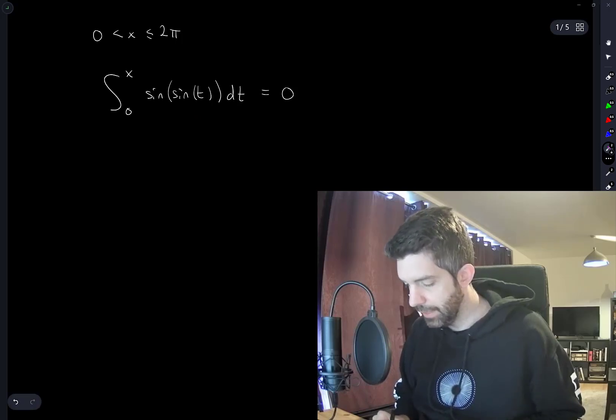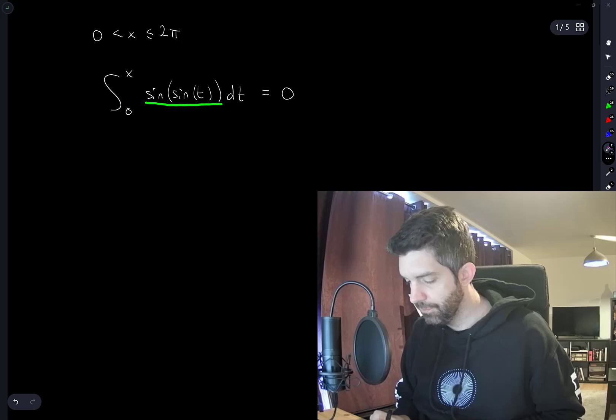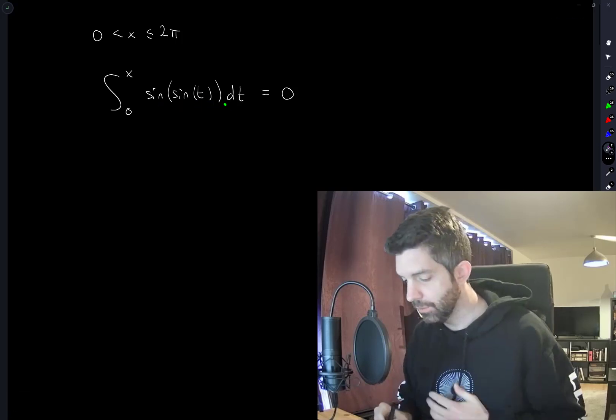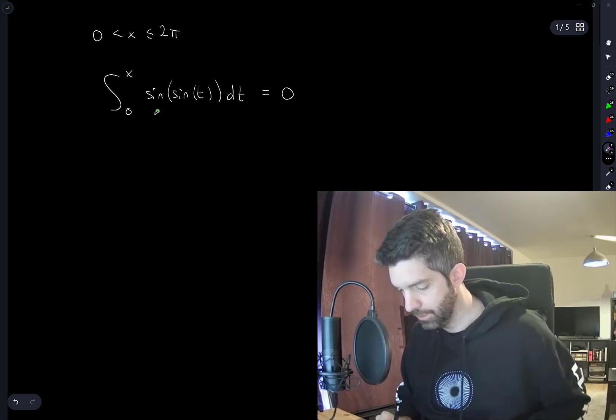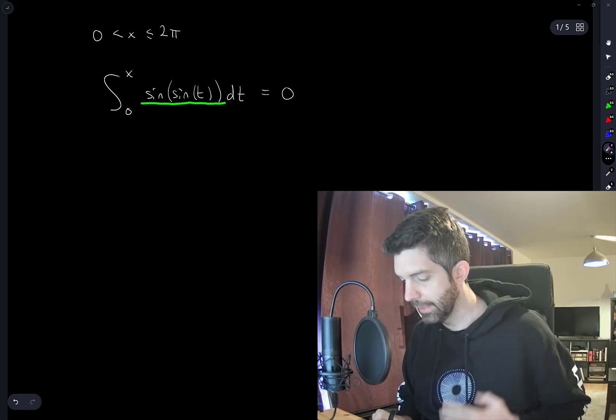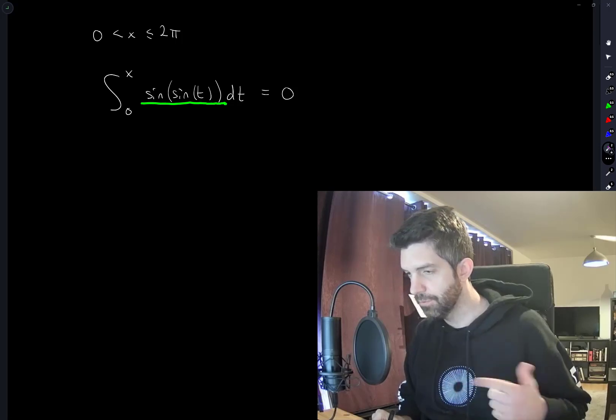And then for larger values of t, this becomes negative. But we're just sort of repeating the cycle. When t is between pi and 2 pi, this function is going to be like an odd reflection of itself from 0 to pi.